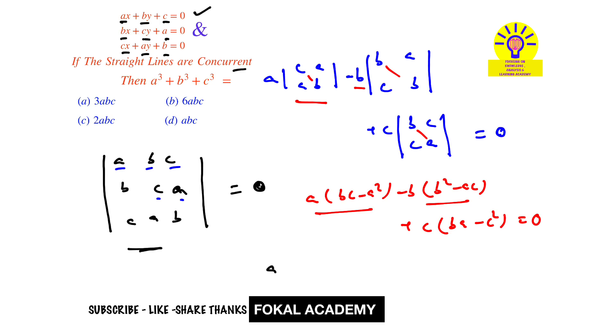So that it becomes abc minus a³ minus b³ plus abc plus abc minus c³ equals zero. Bring the minus terms to the right-hand side. Add these three abc terms and it becomes 3abc equals a³ + b³ + c³.